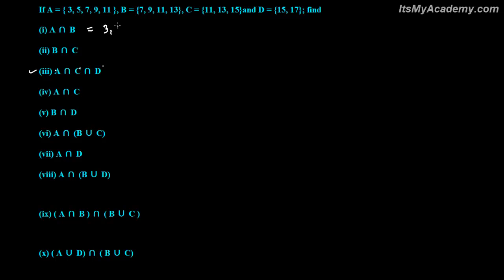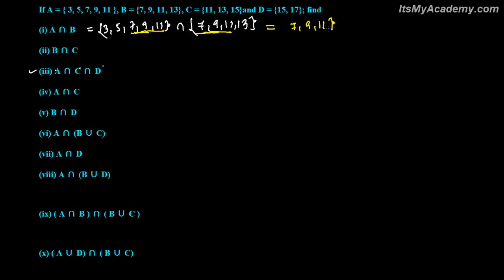So A is: 3, 5, 7, 9, 11. And intersection with B — that is 7, 9, 11, and 13. So what is common in both? Seven, nine, and eleven are in A also and in B also. So A intersection B is the set made with the elements common in A and B, which gives us {7, 9, 11}. You can do the same thing from the Venn diagram also.